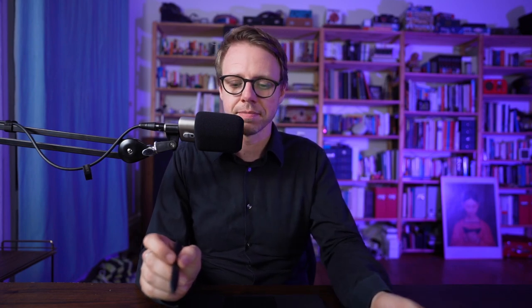If we now drop the dependency on i and j in V we actually already get what we wanted to achieve today, and namely a convolutional layer. So V now is only two-dimensional and it is just indexed by these offsets a and b.